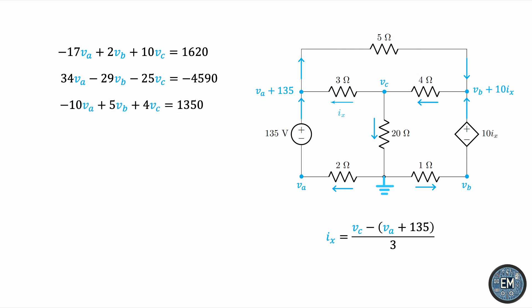So, a linear system, three equations with three unknowns. You can solve it using any method, substitution, elimination, Gauss-Jordan, Kramer's Rule, if you want to be fancy, anything. VA ends up being negative 129.6, VB is 68.4, and VC is negative 72 volts.